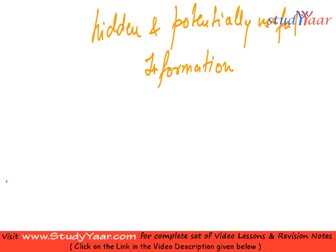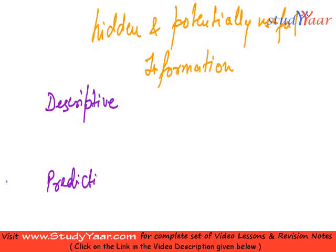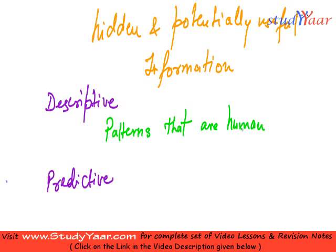The information in the data mining process is normally categorized into two broad categories. These broad categories are descriptive information and predictive information. In descriptive information, what we do is we find patterns that are human interpretable — something that humans can understand. We try to discover that kind of patterns from my set of data that is present in my data warehouse.